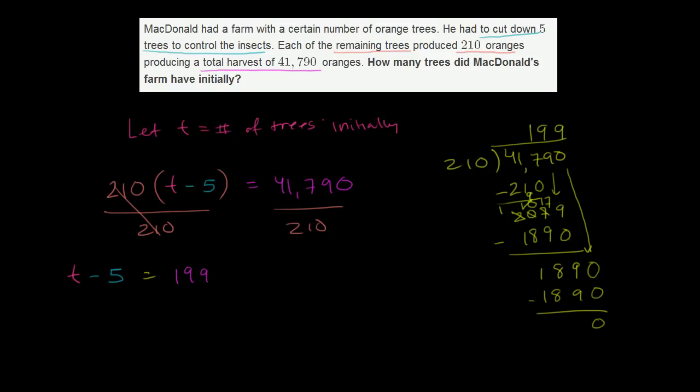And now we just have to add five to both sides. Remember, whatever we have to do to one side, we have to do to the other. Otherwise, the equality wouldn't be equal anymore. They were equal before adding five, so if you want them to still be equal, you have to do the same thing to both sides. So the left-hand side becomes t. And the right-hand side becomes 204. So he started off with 204 trees.